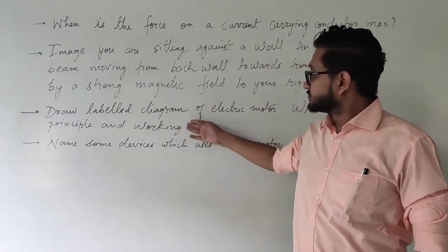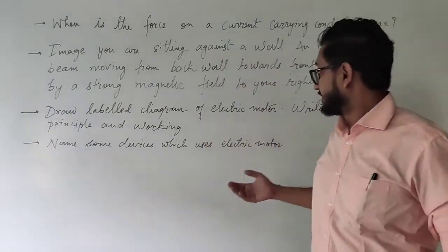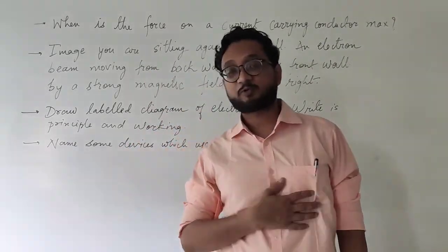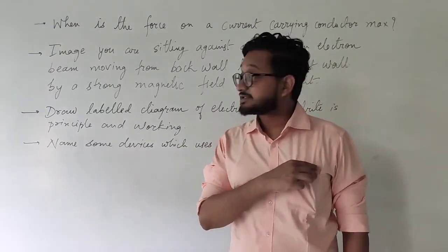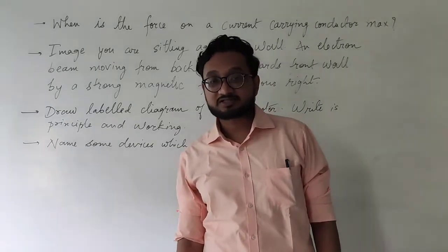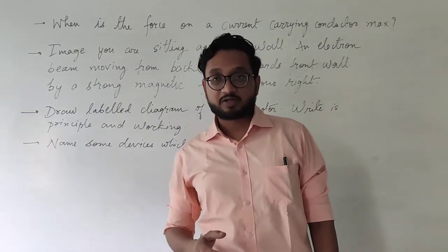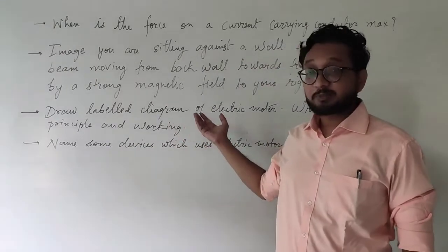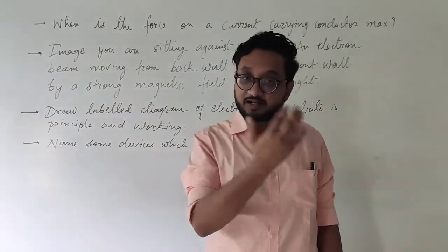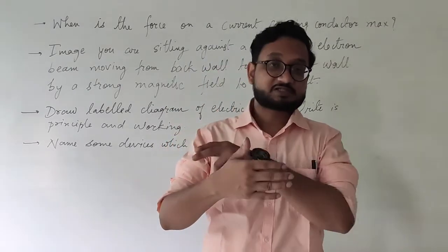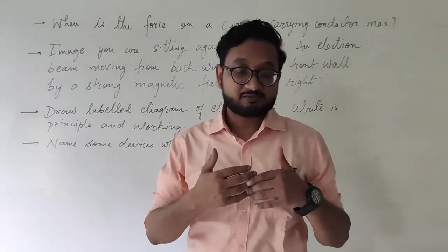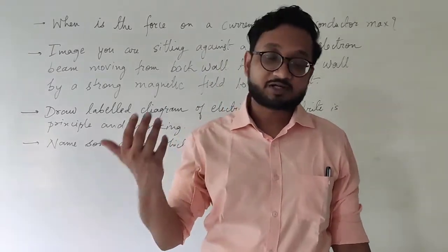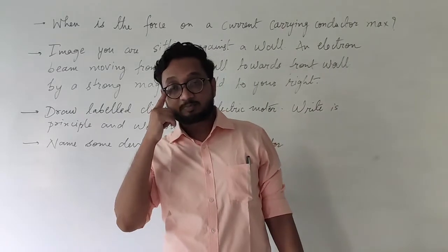Next question: draw a labeled diagram of an electric motor and write its principle and working. The principle is simple - when a current carrying conductor is placed in a magnetic field, it experiences a force. This is the principle of the electric motor. The conductor moves according to Fleming's left hand rule, in a direction determined by the magnetic field and direction of current.